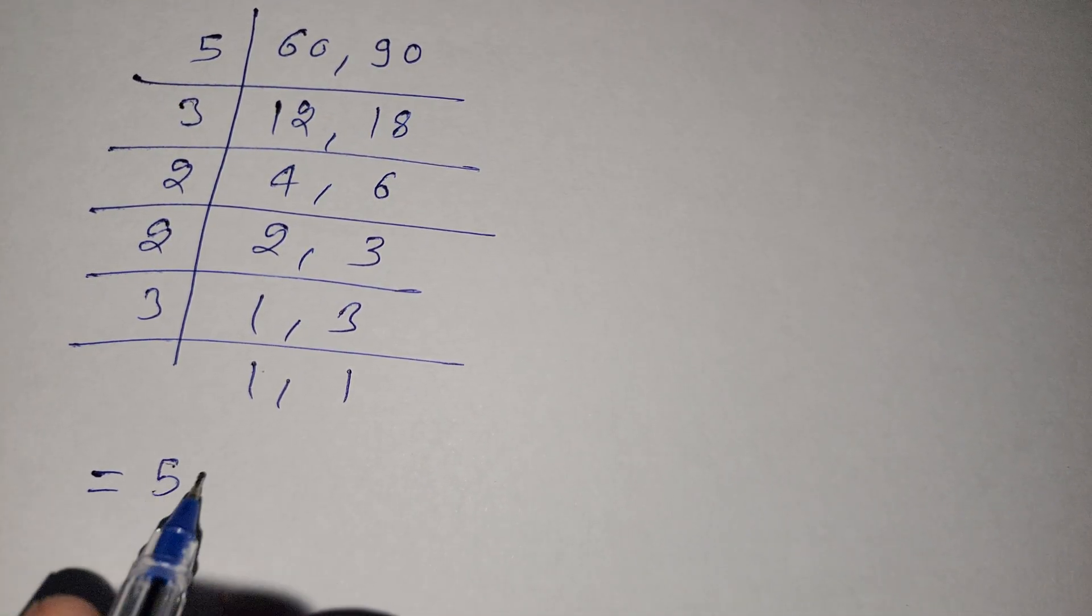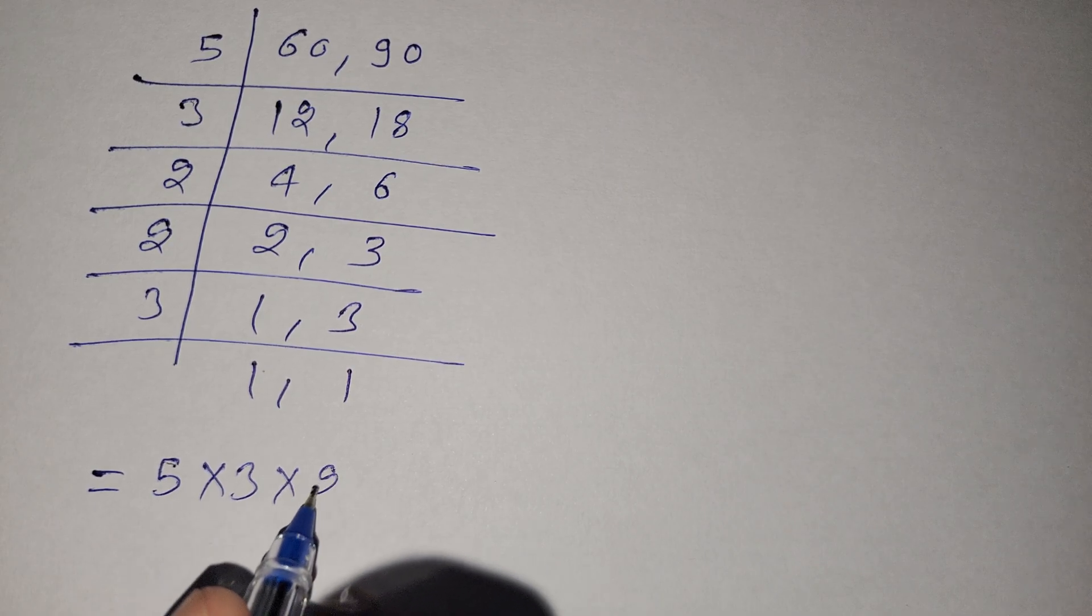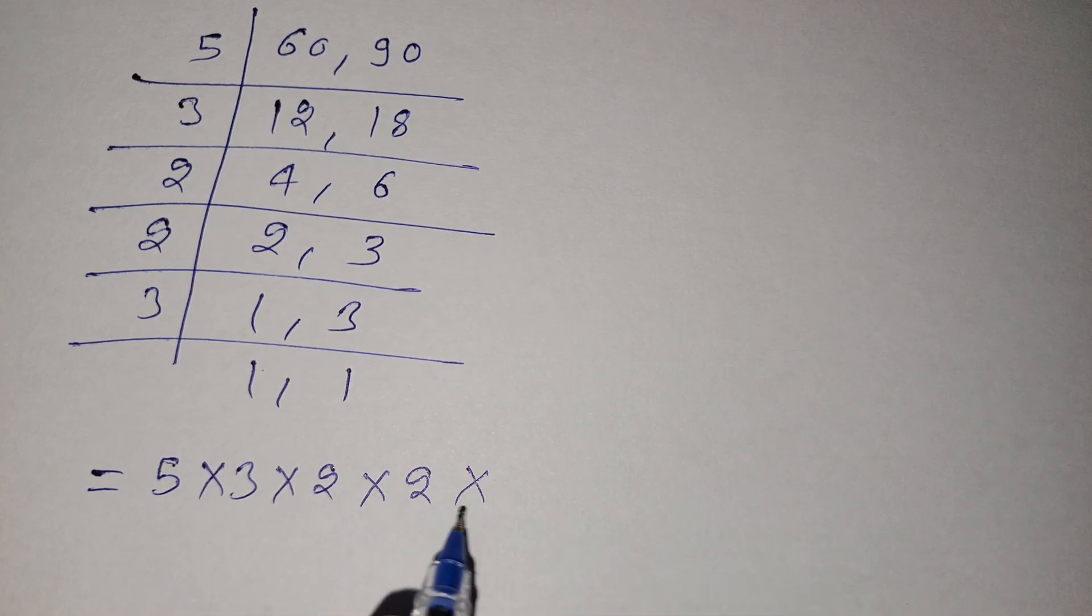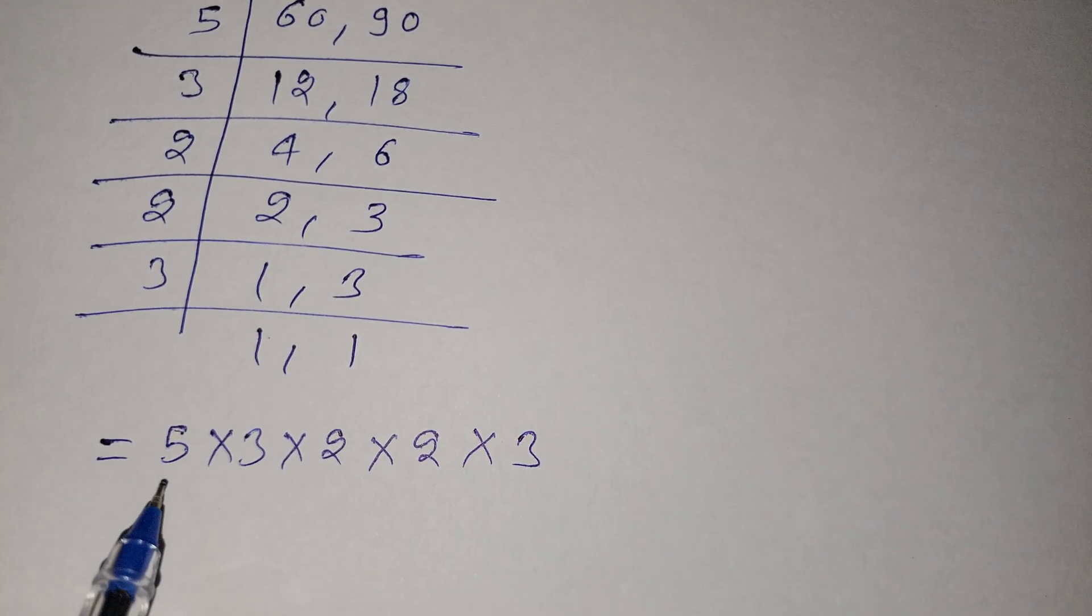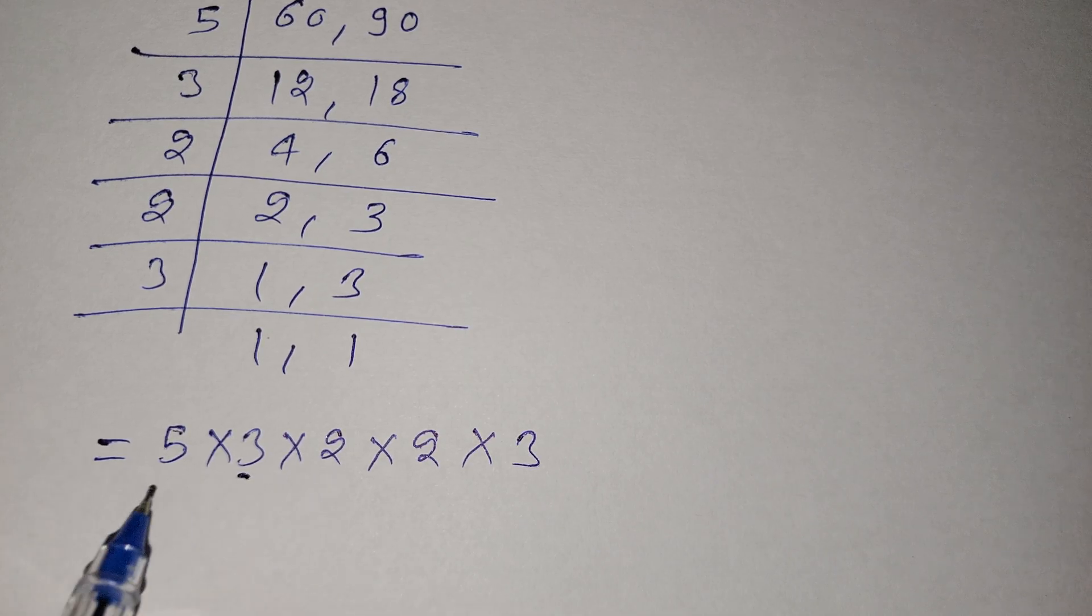So we have factors 5 multiply 3 multiply 2 multiply 2 multiply 3. So 5 threes are 15.